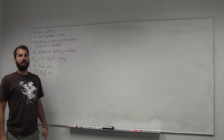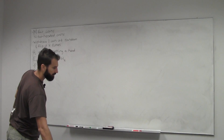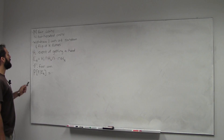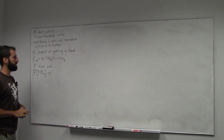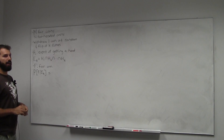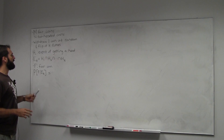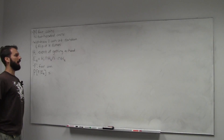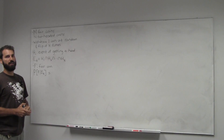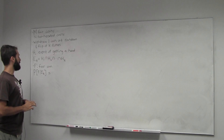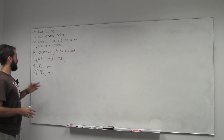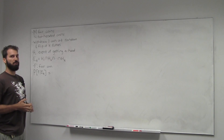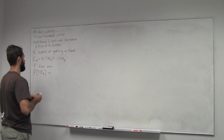Now we're going to use some of the concepts that Tyler just reviewed to solve this problem. We have M fair coins and N two-headed coins. We withdraw one of these coins at random and flip it k times. H sub i will be the event of getting a head, E sub k will be the event of getting k heads in a row, and F is that you have the fair coin. We are asked to solve for the probability that you have the fair coin given that you've seen k heads in a row. The first thing we're going to do is use Bayes' rule and flip these conditional probabilities around to look at what's the probability you get k heads in a row given you have a fair coin — that's a lot easier to think about.